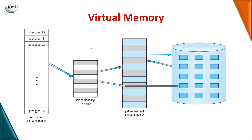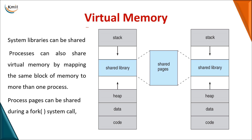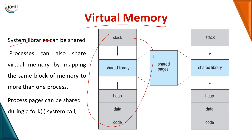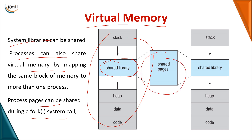Looking at the pictorial representation: in the memory map, physical memory size is much less compared to virtual memory. It has fewer frames than pages, so virtual memory size is greater than physical memory size. Virtual memory can also be used for sharing system libraries — the logical view shows code, data, heap, and data allocated from shared libraries. Processes can share pages through virtual memory, and using fork, child and parent processes can access the same shared pages.